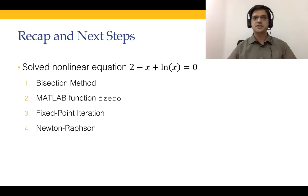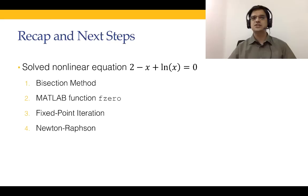Before we move on, let us recap what we have done so far in module 5. We took the example f(x) = 2 - x + ln(x) = 0 and solved this single variable equation. In the first lecture we covered the bisection method and wrote our own code. In the second lecture we showed how to use the MATLAB function fzero. In the next two lectures we covered fixed point iteration and Newton-Raphson's method for the same example.